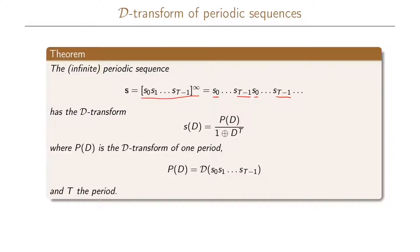This sequence will have the D-transform P divided by 1 plus d to the period of this sequence. P here is the D-transform of one period of the sequence — so it's the D-transform of the sequence s0, s1, and up to s_{t-1}. We can prove this theorem as follows.